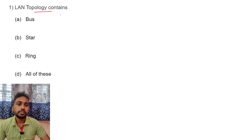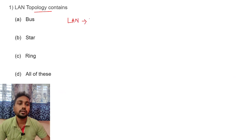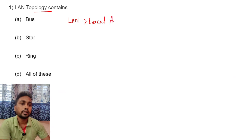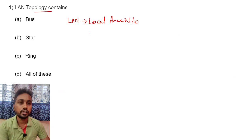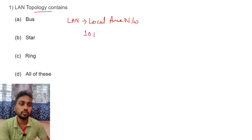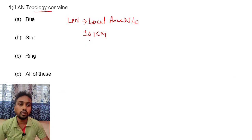First question: LAN topology. LAN means Local Area Network. If you see the range, local area network is used in the range of 10 kilometers. Generally, this LAN we are using in a school, office, or home — using Ethernet cable or Wi-Fi.